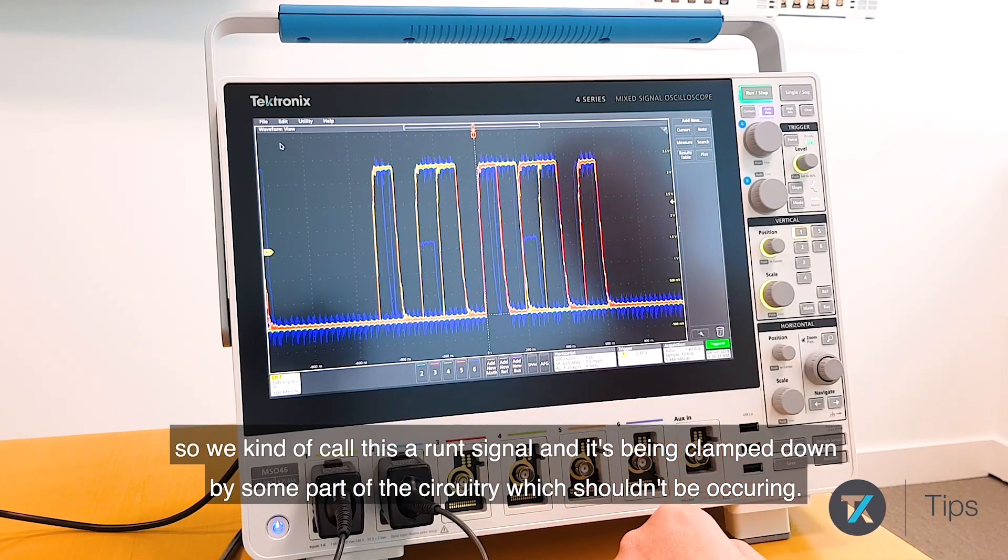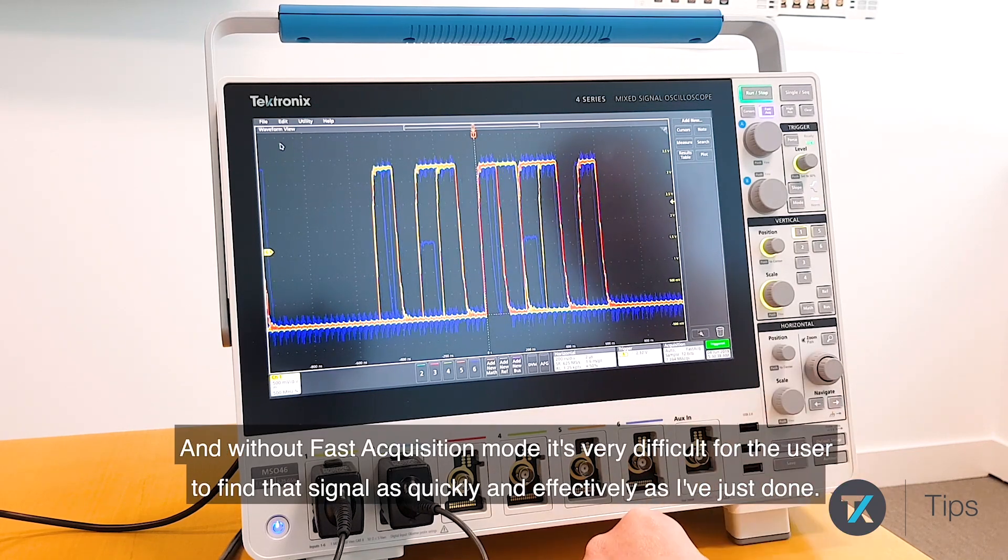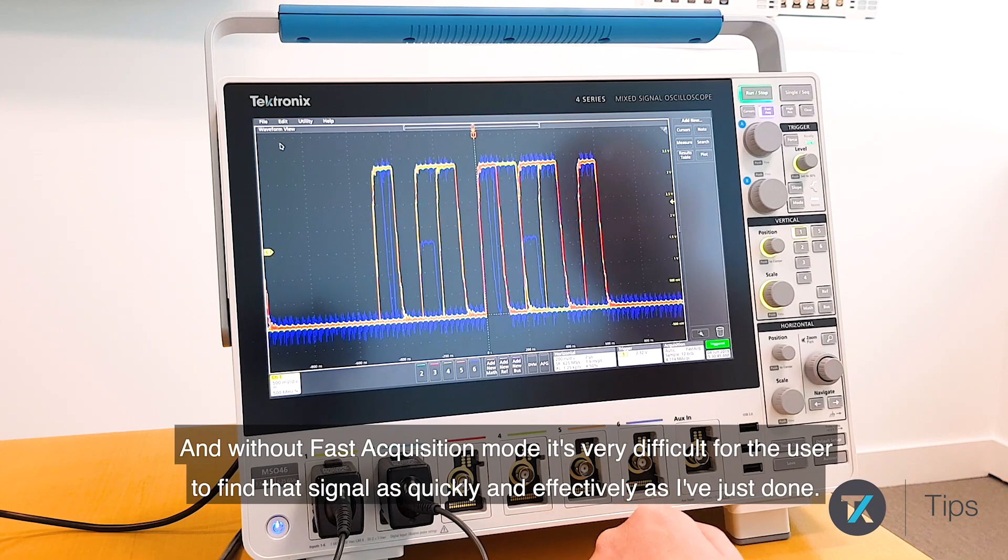We call this a runt signal and it's been clamped down by some part of the circuitry which shouldn't be occurring. Without Fast Acquisition mode, it's very difficult for the user to find that signal as quickly and effectively as I've just done here.